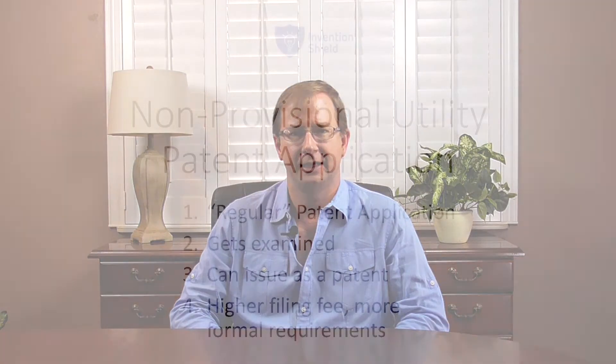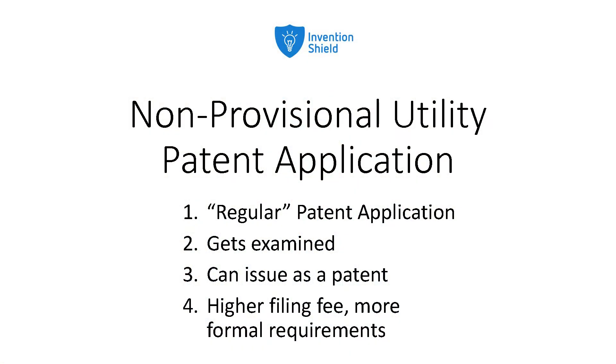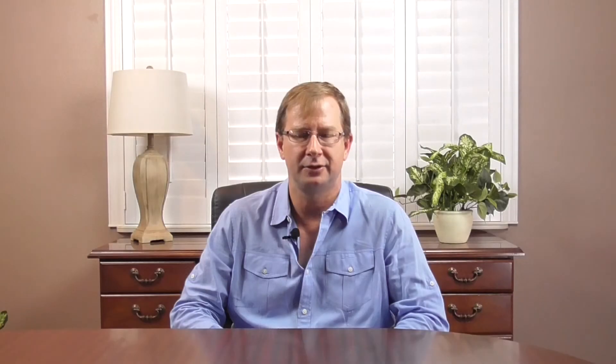The filing fee for a provisional application is quite a bit less than a non-provisional. A non-provisional utility application is what we would consider a regular patent application — it's going to get examined and can issue as a patent if allowed by the US Patent and Trademark Office. The non-provisional application has a higher filing fee than the provisional, but it can issue as a patent.